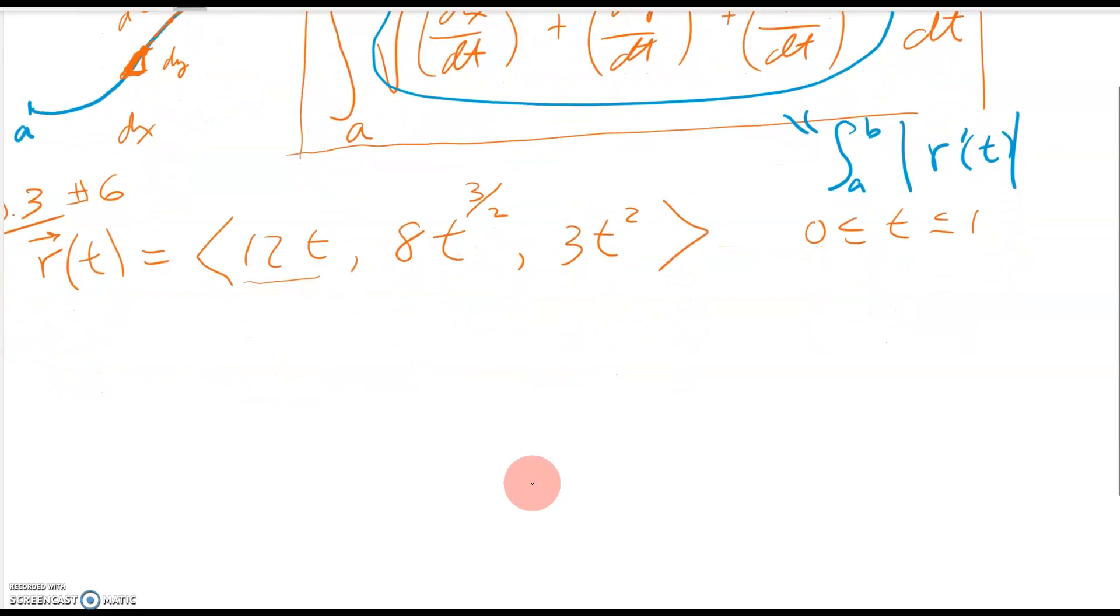So let's take the derivative of our vector function rt. We get 12, just power rule here. So three halves times eight would be, well, let's see, eight divided by two is four times three is 12. So 12 t to the one half power, reduce the power by one and then 6t. Okay.